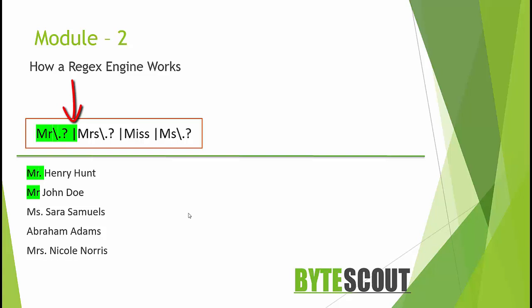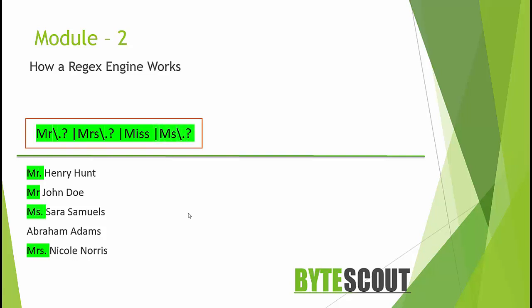Here we have specified the alternative. So in the name, if the Mr. title is not found, then the engine will backtrack to match the next alternative. Therefore the engine also stores the backtracking position. Here there is no match for Miss title, so the engine will move ahead and match for the next alternation.